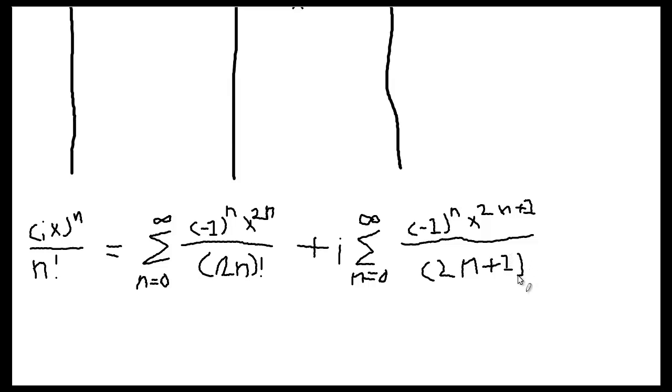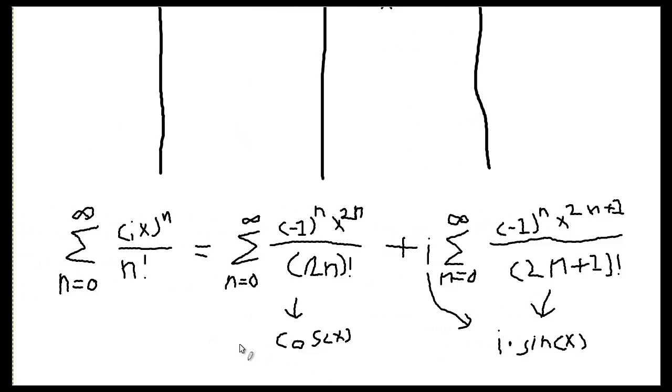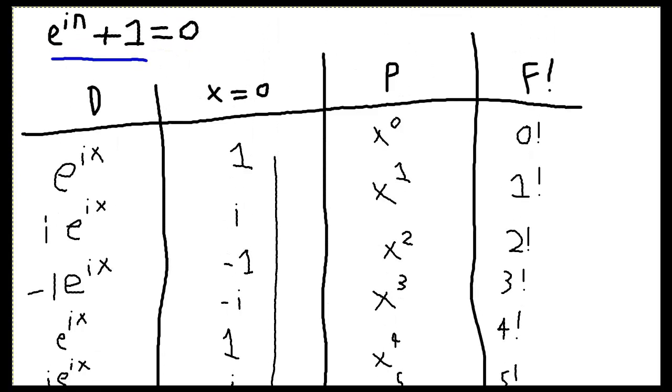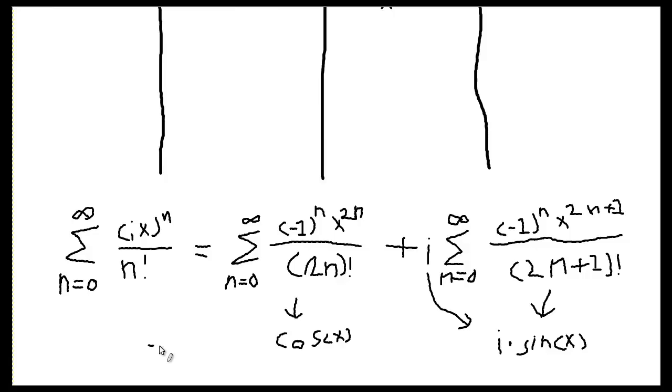Now, for those of you that have taken this, I said these should look familiar. And that is because this series here becomes sine x. And this series here becomes cosine x. And we're going to have to multiply it by i because that's what we have in the front here. So now we have, up top, e to the ix is equal to cosine of x plus i sine x.